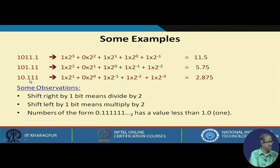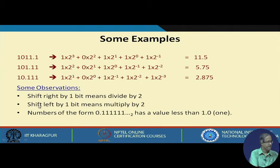One thing you notice across these examples is that the decimal point is actually shifting left by one position from each number to the next. When the radix point shifts left by one position, you see that this means a divide by two: 11.5 divided by two gives 5.75, and 5.75 divided by two gives 2.875. So shifting right by one bit — moving the radix point to the left — means divide by two; moving the point to the right means multiply by two.